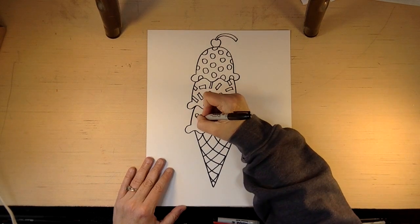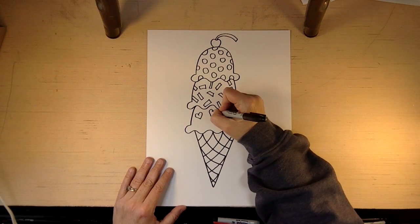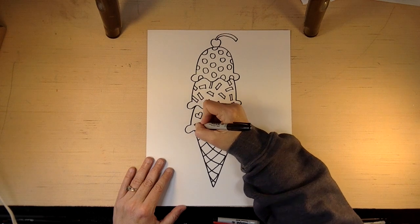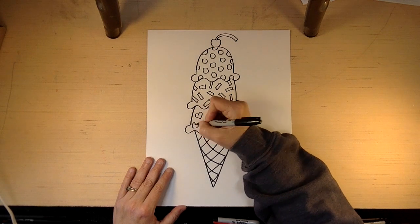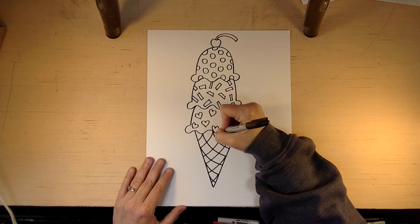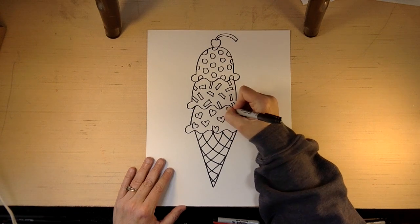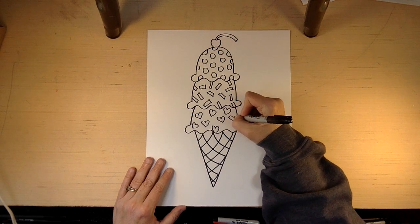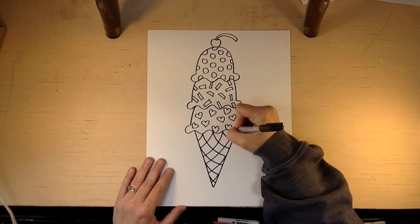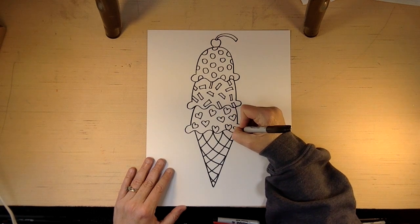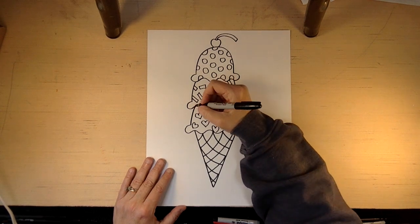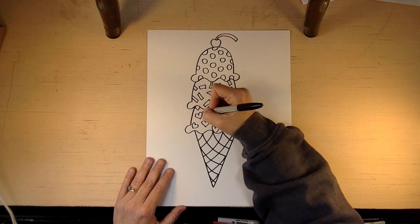And then maybe on the bottom one, we just do hearts. You can do hearts or you can do stars. Like I said, this is your imagination. So it doesn't have to be boring old flavors. You can use your, like this will be, like a heart flavor.